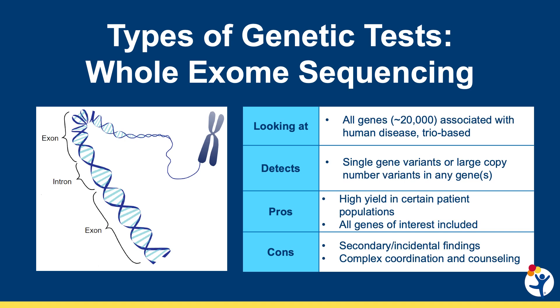Whole exome sequencing, on the other hand, is very popular nowadays but presents challenges. While powerful, it analyzes all known genes in the human genome — about 20,000 of them — and has a much higher incidence of secondary incidental findings that one must be prepared to contend with. Because of this, one must expect variants of unknown significance and be prepared to offer genetic counseling. It is detailed enough, however, to pick up single gene variants in patients who do have a skeletal dysplasia.